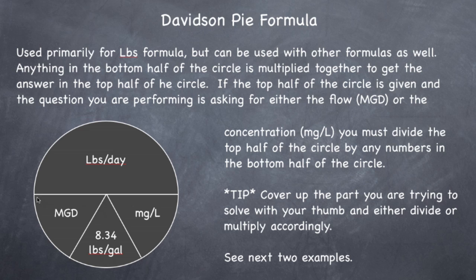And what you do is anything on the bottom half of this circle is multiplied together to give you the top half of this circle. They'll give you flow, concentration, and then this is your constant. Put this in there, put that in there. You multiply this by this by this, and it will give you pounds of whatever per day.